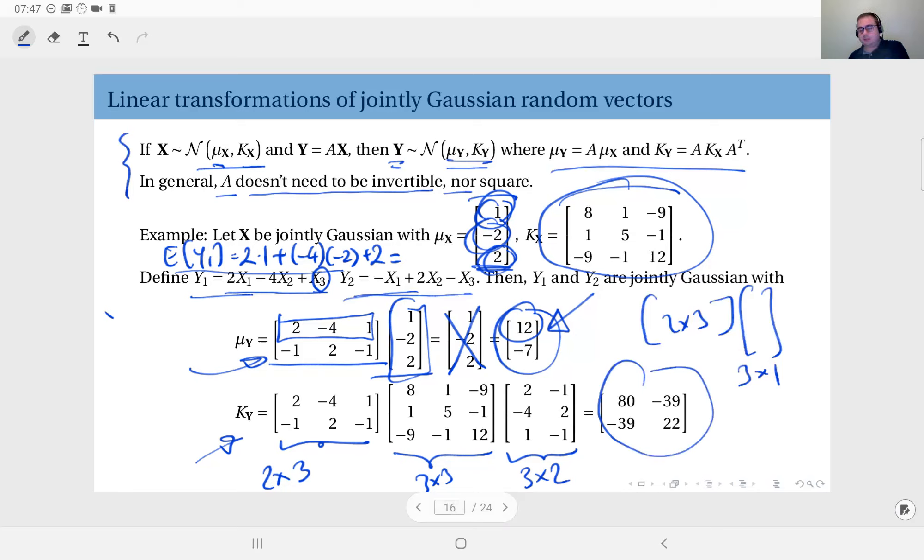This is not surprising because random vector Y is a two-dimensional vector. Therefore, the covariance matrix will be two by two. You see you have in the diagonal the variances of Y1 and Y2, and in the off-diagonals you will have the covariances. Clearly, this matrix is a symmetric matrix as expected because it's a covariance matrix.